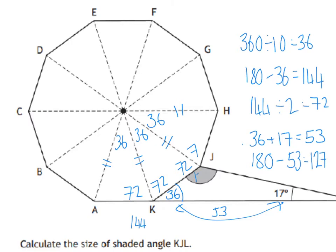I'm going to put it on my diagram and at the side I'm going to say that my final answer, angle KJL, is 127 degrees. And I'm going to circle it, underline it — whatever it is that makes it clear that that's the final answer.